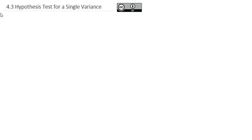Today, we're going to take a look at another use of the chi-squared distribution, and that is testing a claim about a single variance. Our question is going to be, how do we test a claim about a variance?